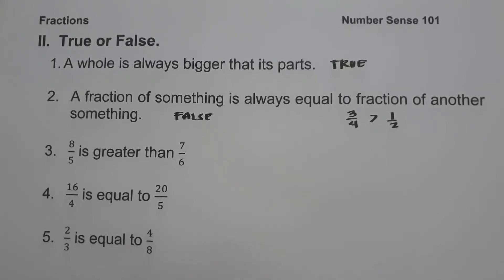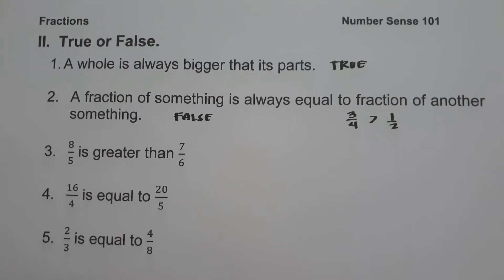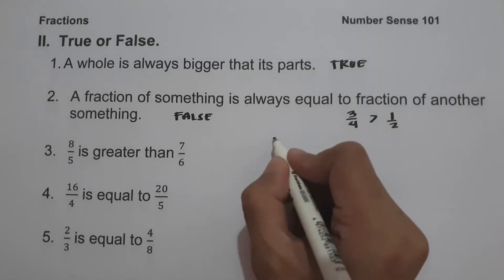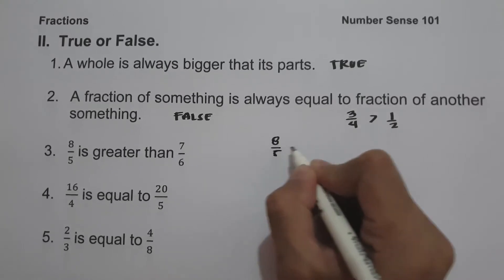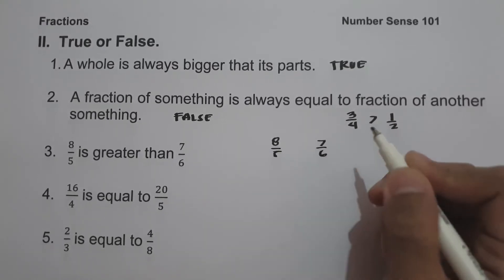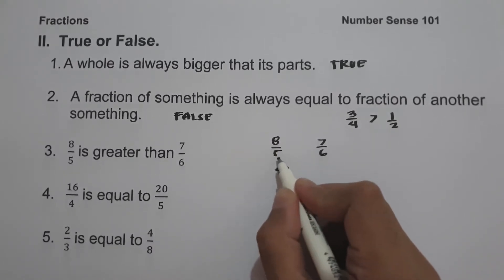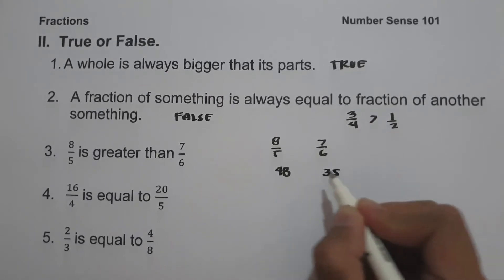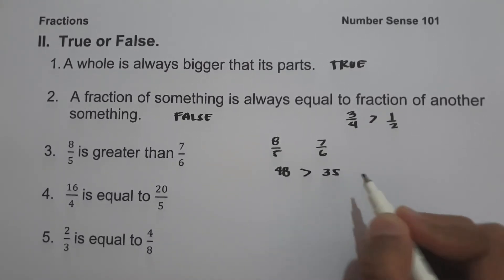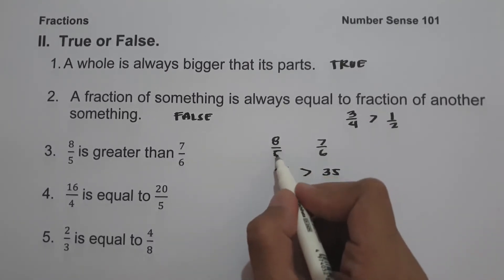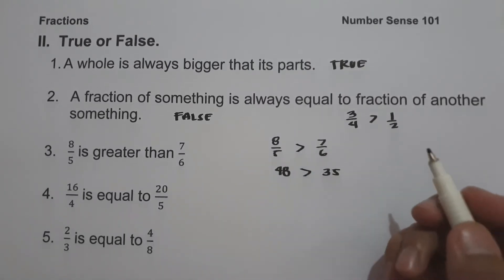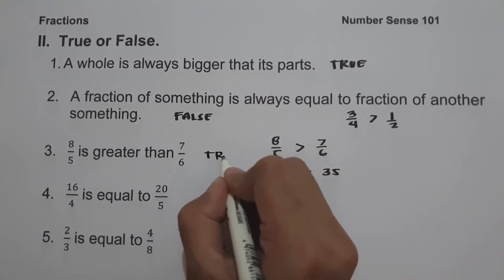On number 3, we have: 8 over 5 is greater than 7 over 6. To check this, we cross-multiply: 8 times 6 is 48, and 5 times 7 is 35. Since 48 is greater than 35, 8 over 5 is greater than 7 over 6, so the statement is true.